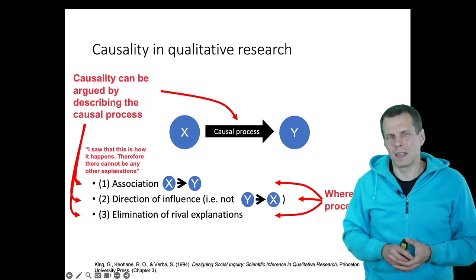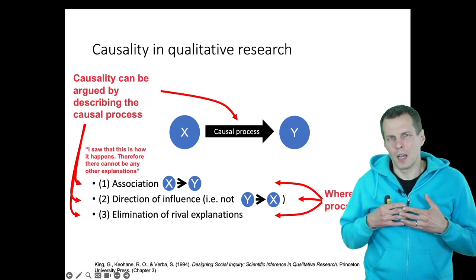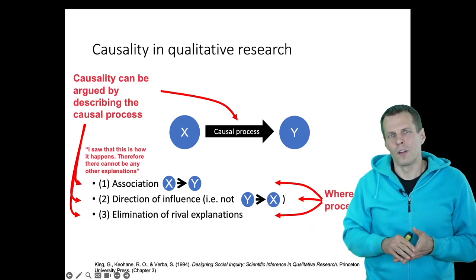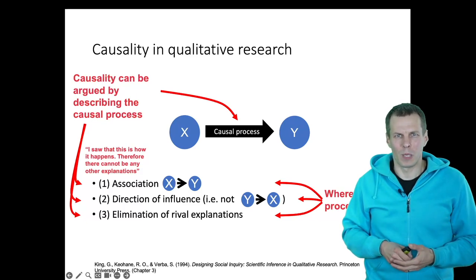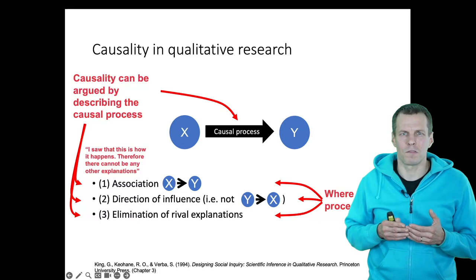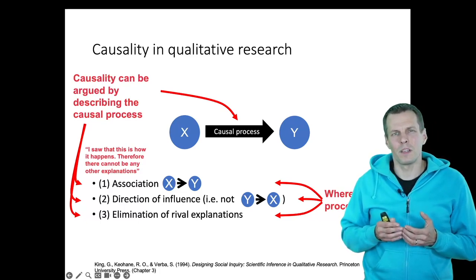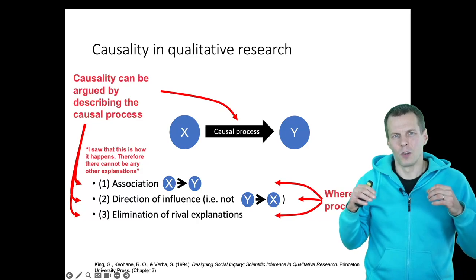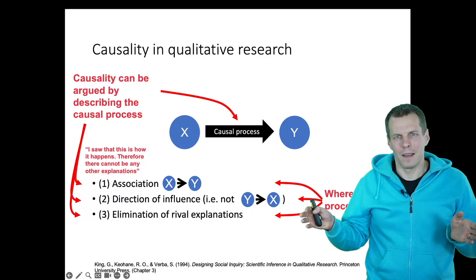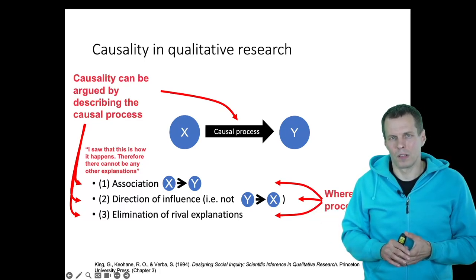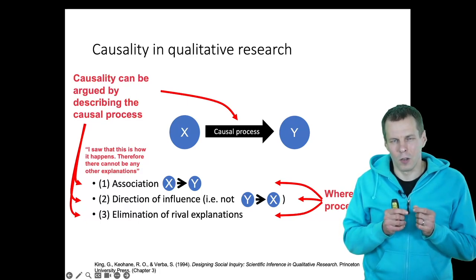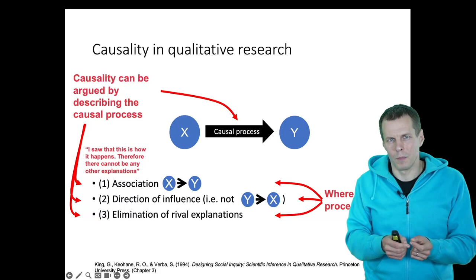In qualitative research, you would essentially say: I went to these cases, I observed what happened, and therefore women are the cause of the profitability differences. The main difference between the two strategies is that a quantitative researcher is far from the actual phenomenon, looking through numbers and applying statistics to rule out alternative explanations, while a qualitative researcher gets close to a few cases and explains the process.